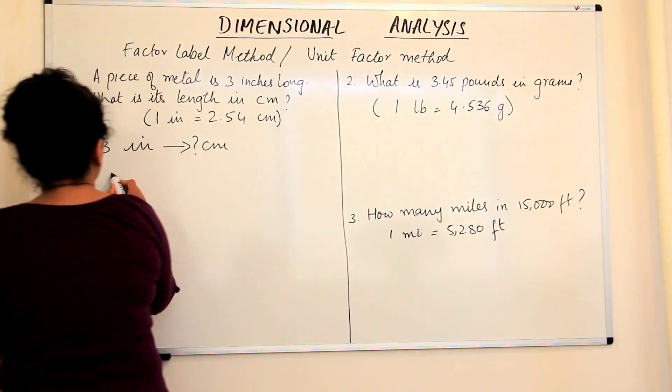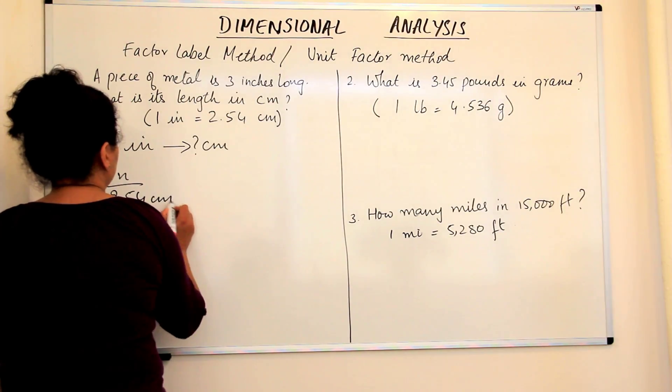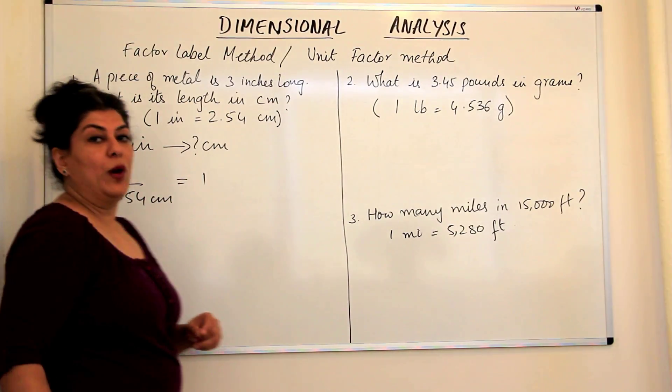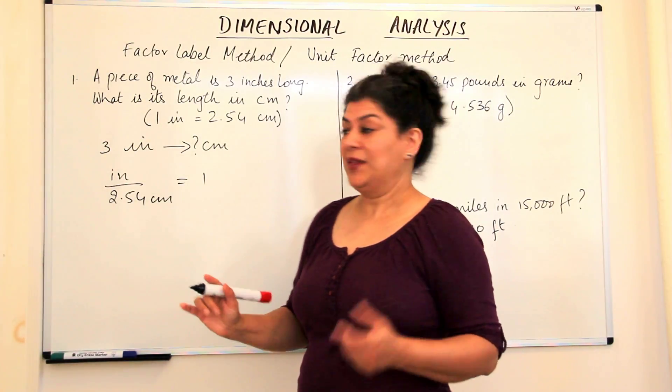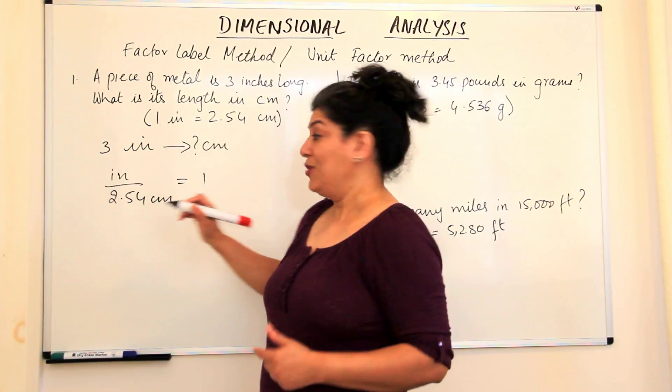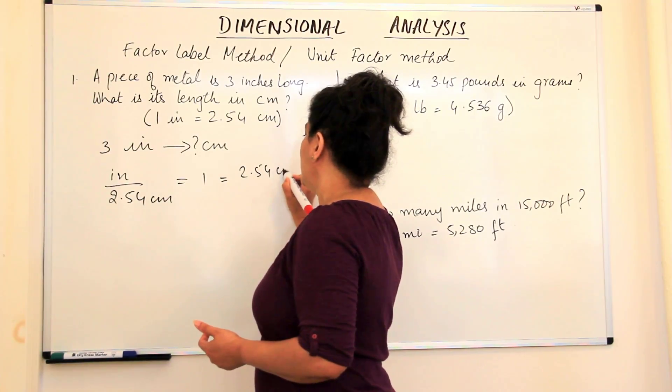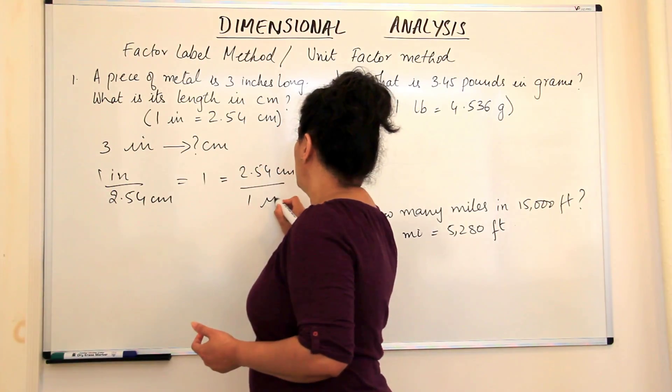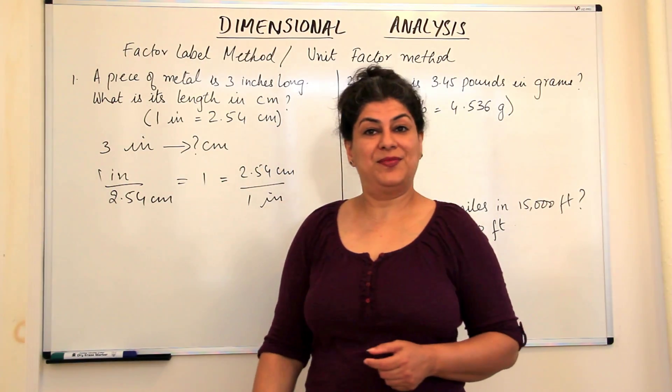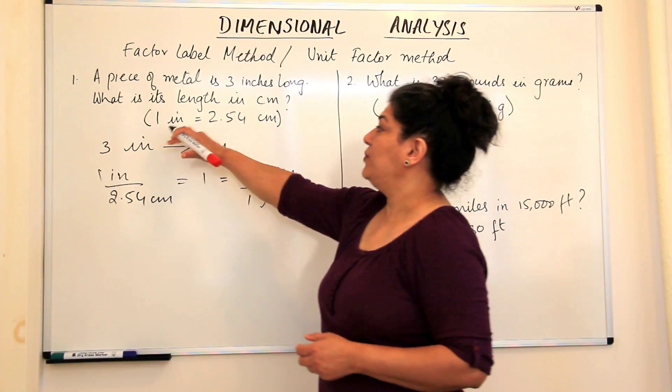So 1 inch upon 2.54 centimeters should be equal to 1, and that's why it's called the unit factor. The reciprocal of this would also be the same. That is, 2.54 centimeters upon 1 inch should also be 1. So these are the two unit factors that we obtain from this equation.